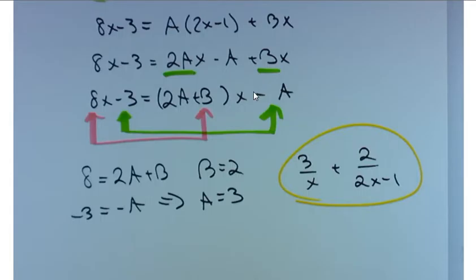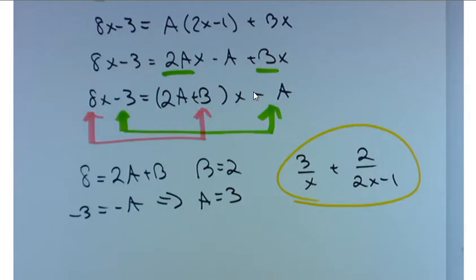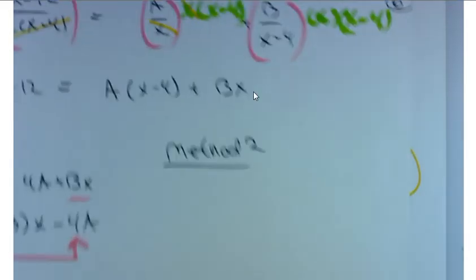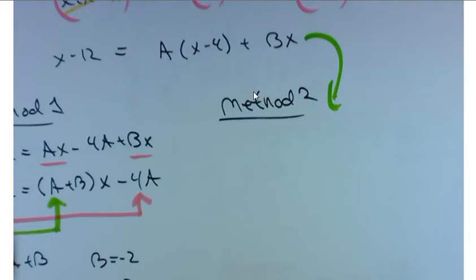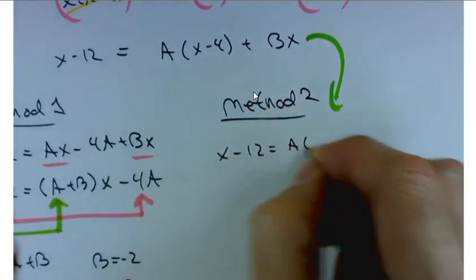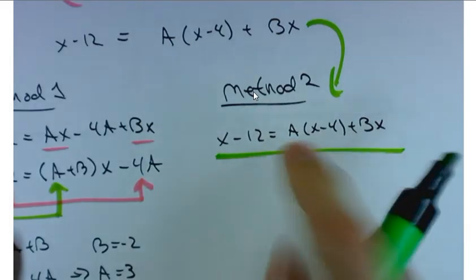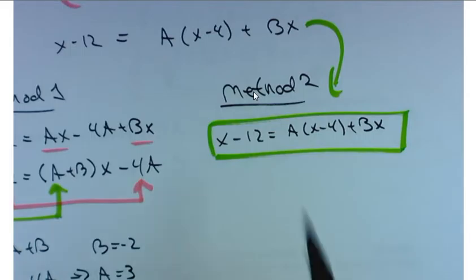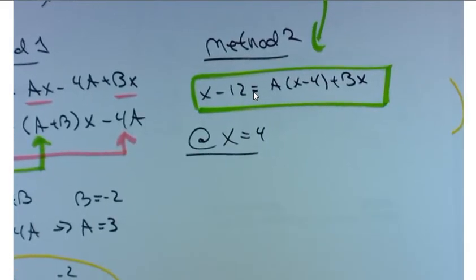Let me go back and show you a shortcut. Now, it works in this case. This case is called the distinct linear factors case. You've got this times this. These are two different linear terms. If you had two of the same linear terms, then it wouldn't work so good. So, let's see what else we can do here. Let me go back up to this step right here. So, I had x minus 12 equals A times x minus 4 plus Bx. Well, this equation holds true for every value of x. It doesn't matter what x is. This equation is going to hold true. In particular, then, at x equals 4, this equation holds true.